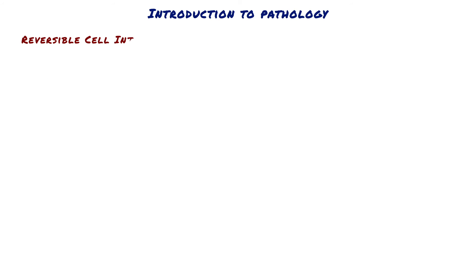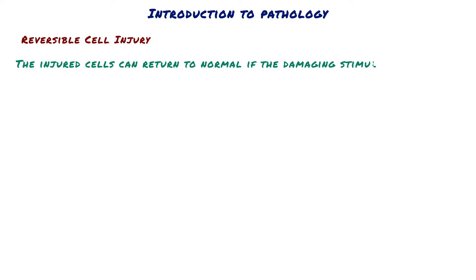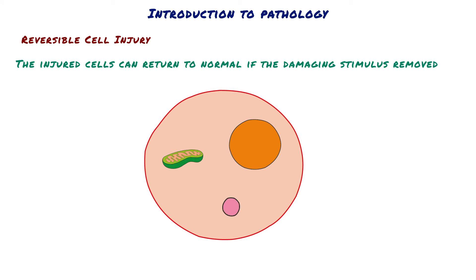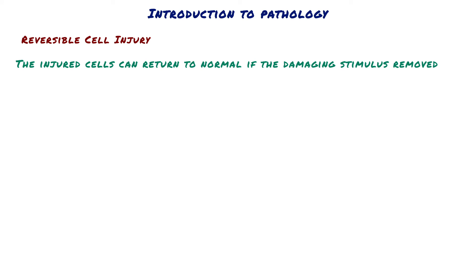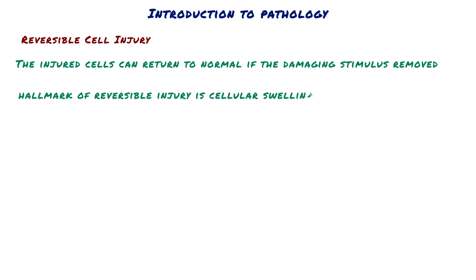In reversible cell injury, the injured cells can return to normal if the damaging stimulus is removed. Cells and intracellular organelles become swollen because water intake occurs due to a lack of ion channels. Degenerated organelles and lipids may accumulate in the intracellular matrix in some forms of injury. The hallmark of reversible injury is cellular swelling. If the damage continues, it becomes irreversible cell injury.